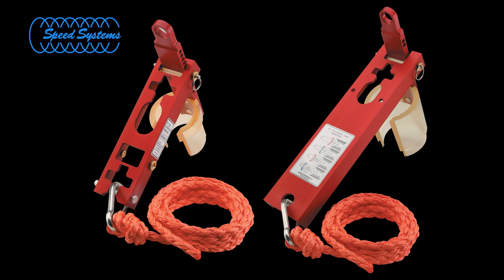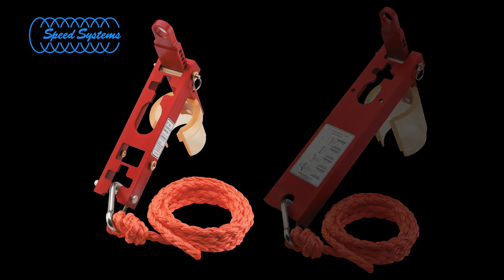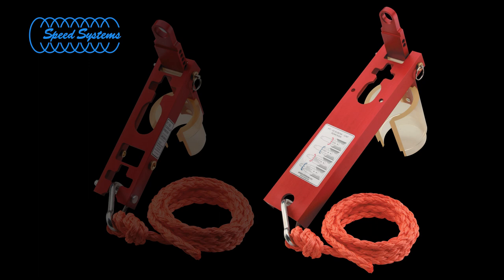Speed Systems makes two versions of the elbow and cap pulling tool. The PT-1525 for all 15 kV, 25 kV, and standard interface 35 kV elbows and caps, and the PT-35 for use on the large interface elbows and caps.